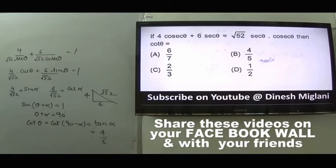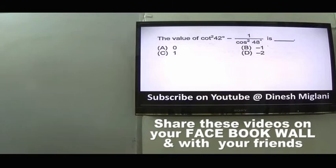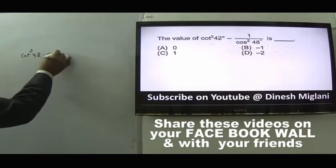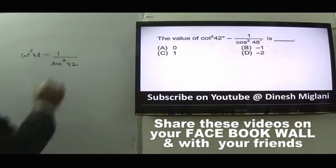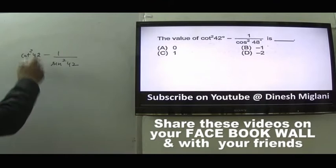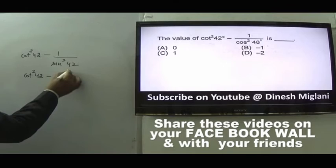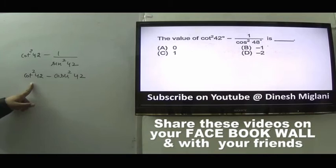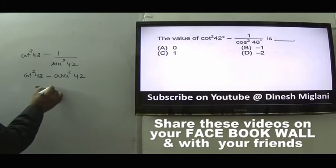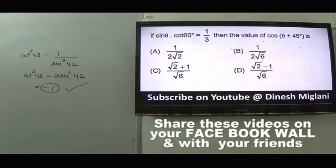Question 40: Find cot²42 - cosec²42. Since cot²θ - cosec²θ = -(cosec²θ - cot²θ) = -1. Answer is B, -1.